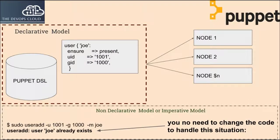Declarative programming means writing code to describe what the program should do, as opposed to how it should do it. One describes what needs to happen; the minutiae for making it so are left to the system. Puppet, for instance, is a declarative language — the sysadmin describes a desired end state and the tool attempts to reach it.